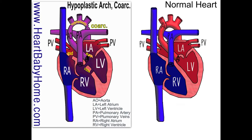So it's like a door that only opens halfway, so not as much can get out as is supposed to go through. Then we also have an ASD and several VSDs — that's an atrial septal defect and two ventricular septal defects.